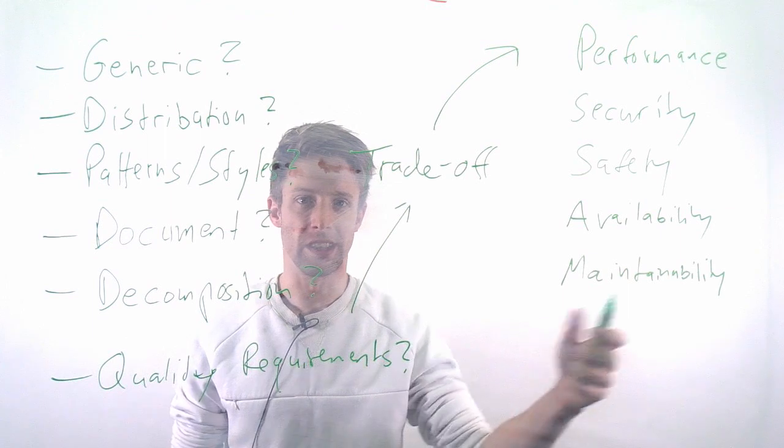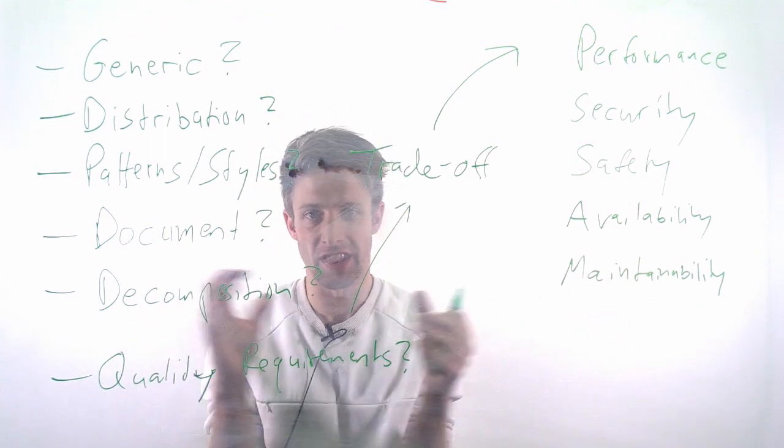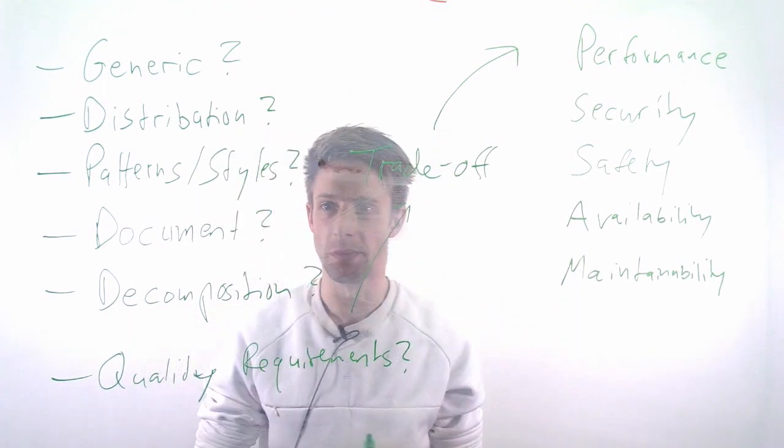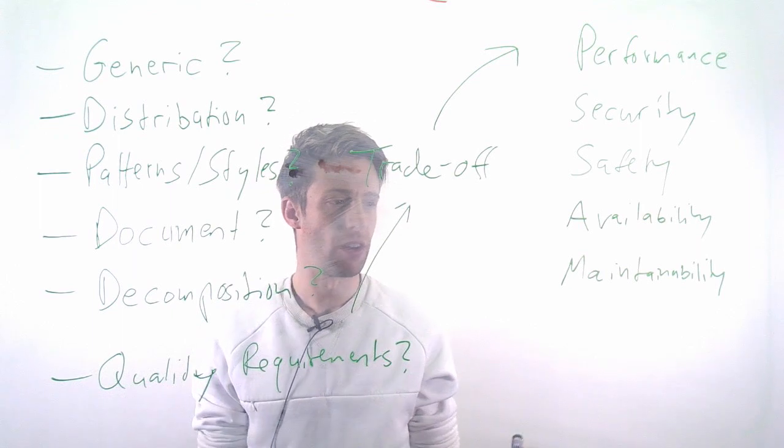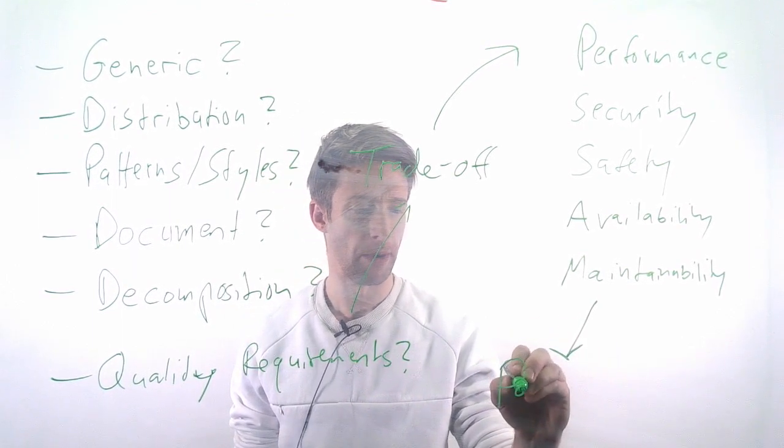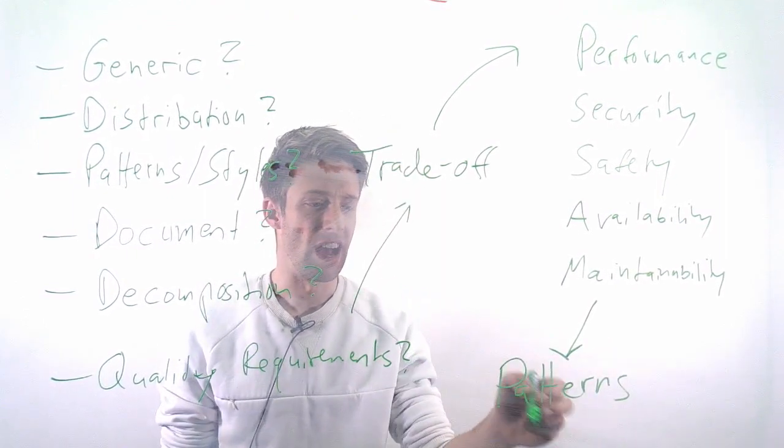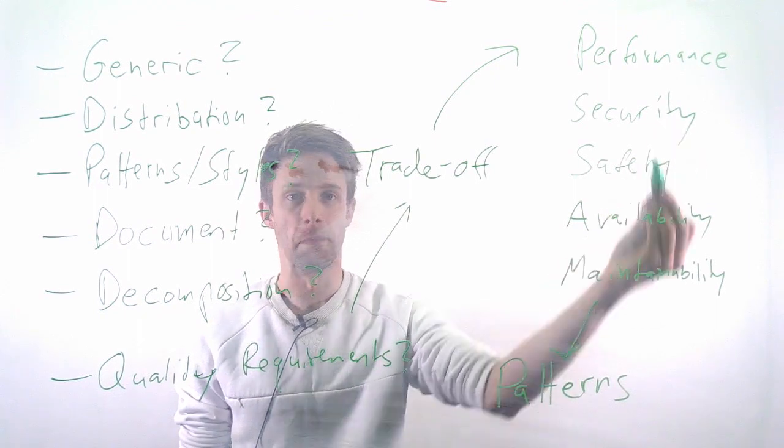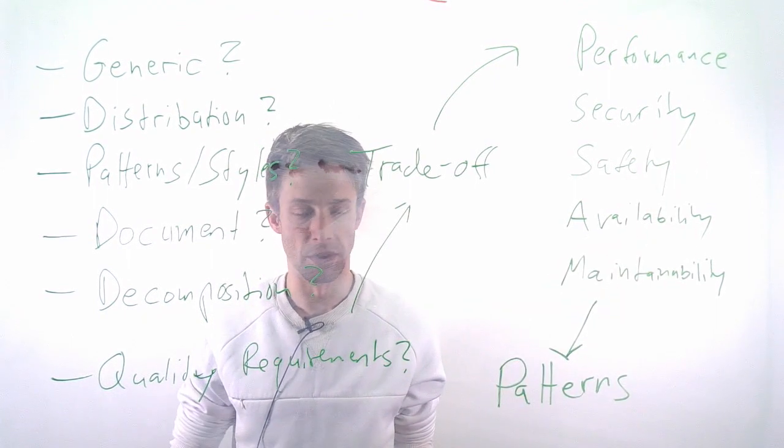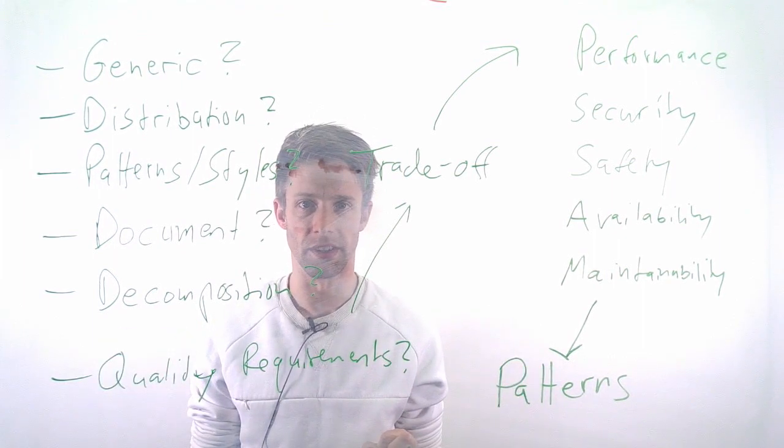And then, more on a development aspect, if it's nicely decomposed, it's easier to maintain it. If everything is together in one component, it might be much, much harder to change things. So, these are typical things we'll look at. And now, in the following, we'll start by looking at these architectural patterns or architectural styles that often have a certain advantage in one or multiple of these areas. So, that's what we'll now go into. We'll just look into a handful of these styles that exist out there.